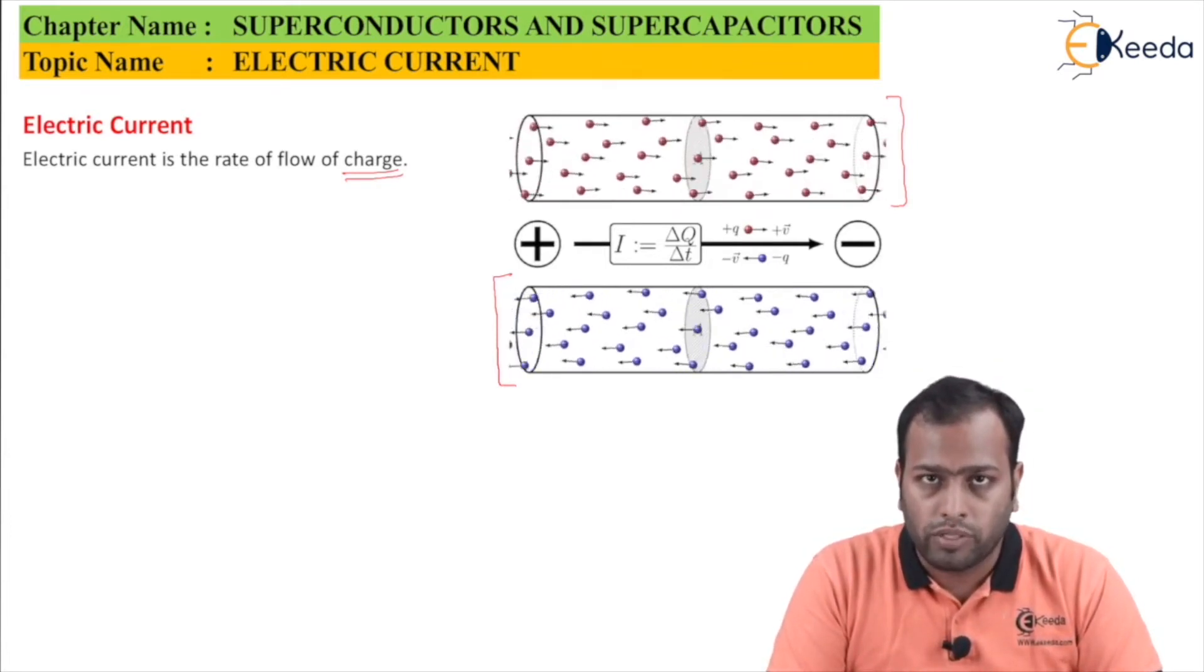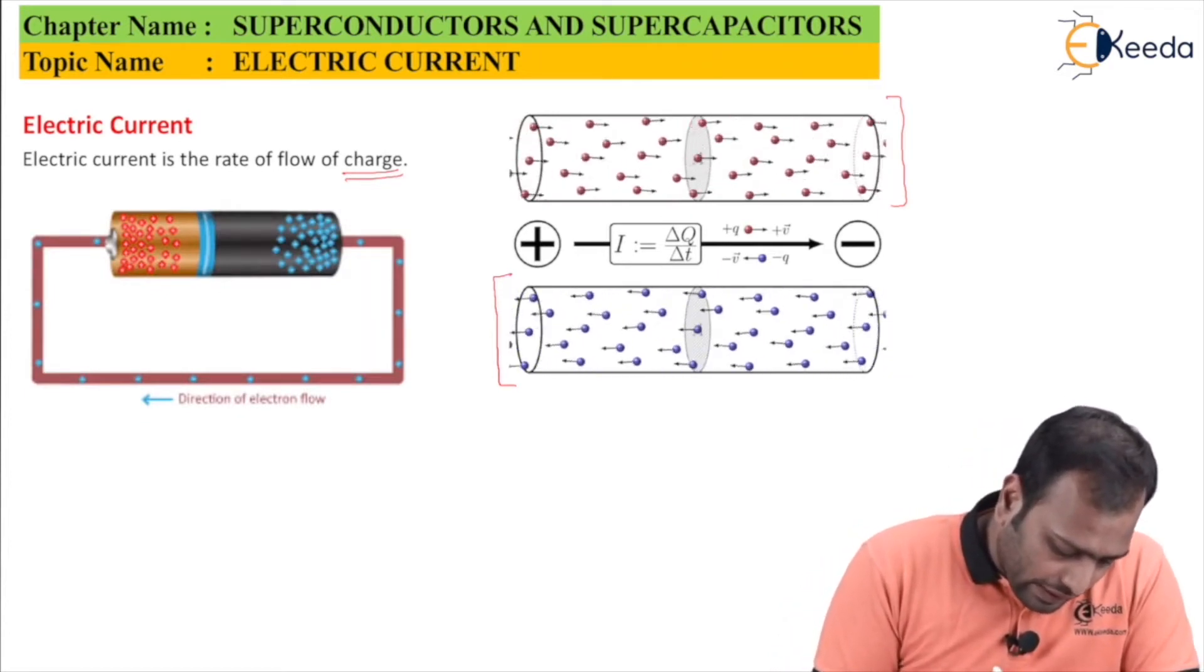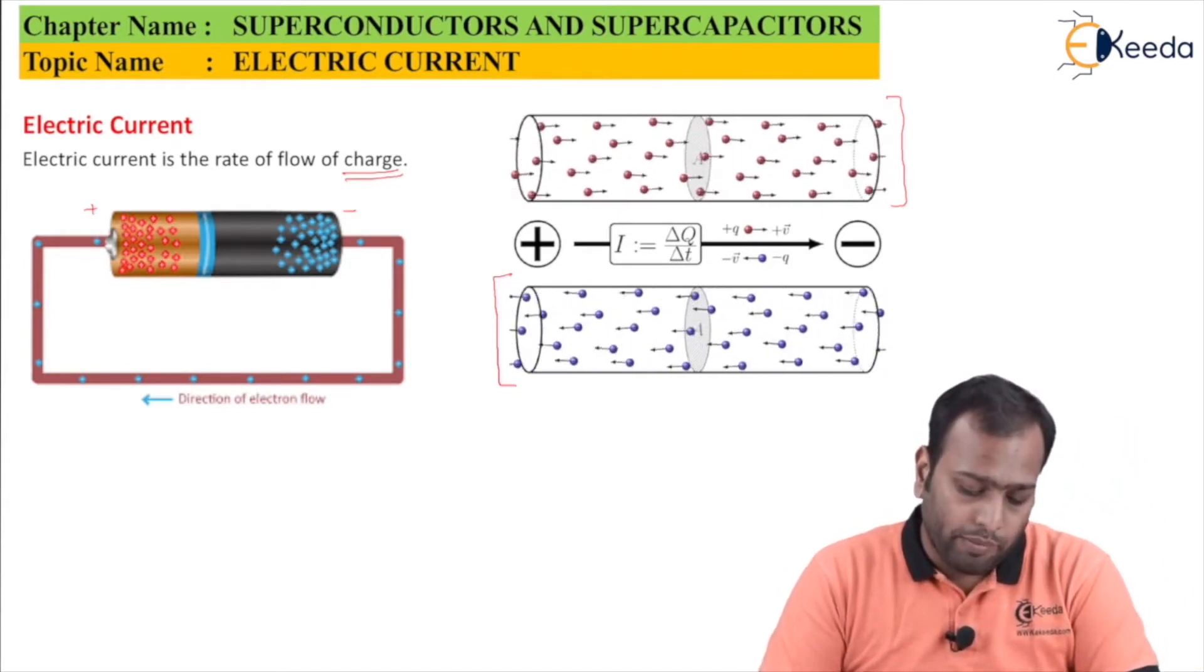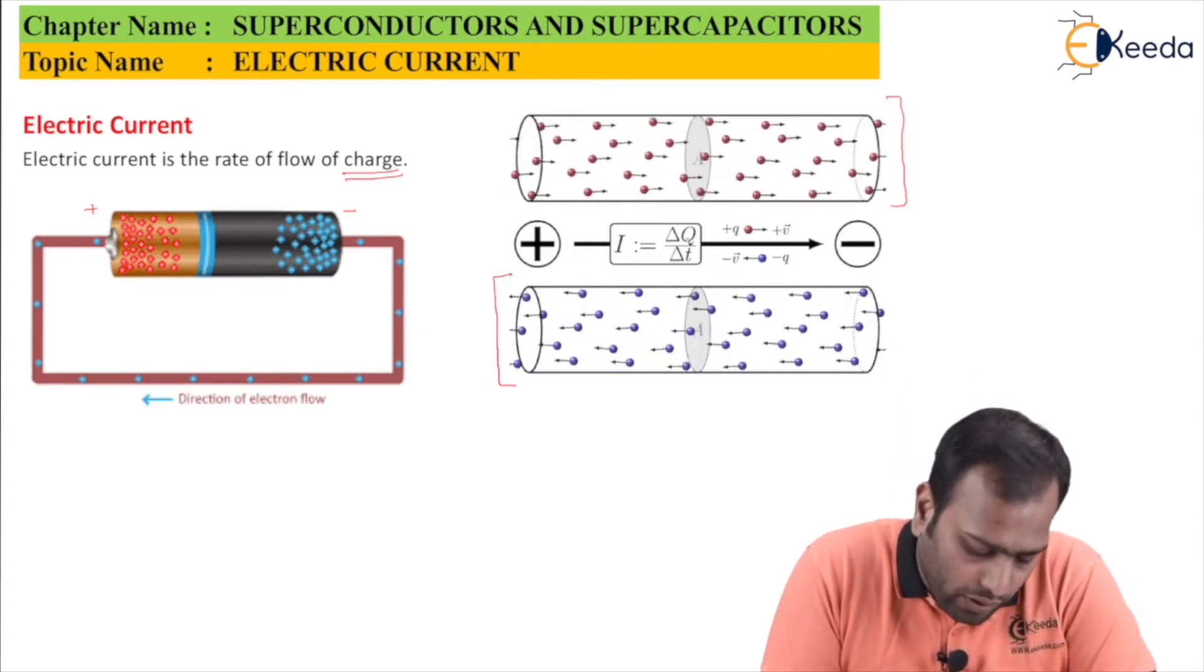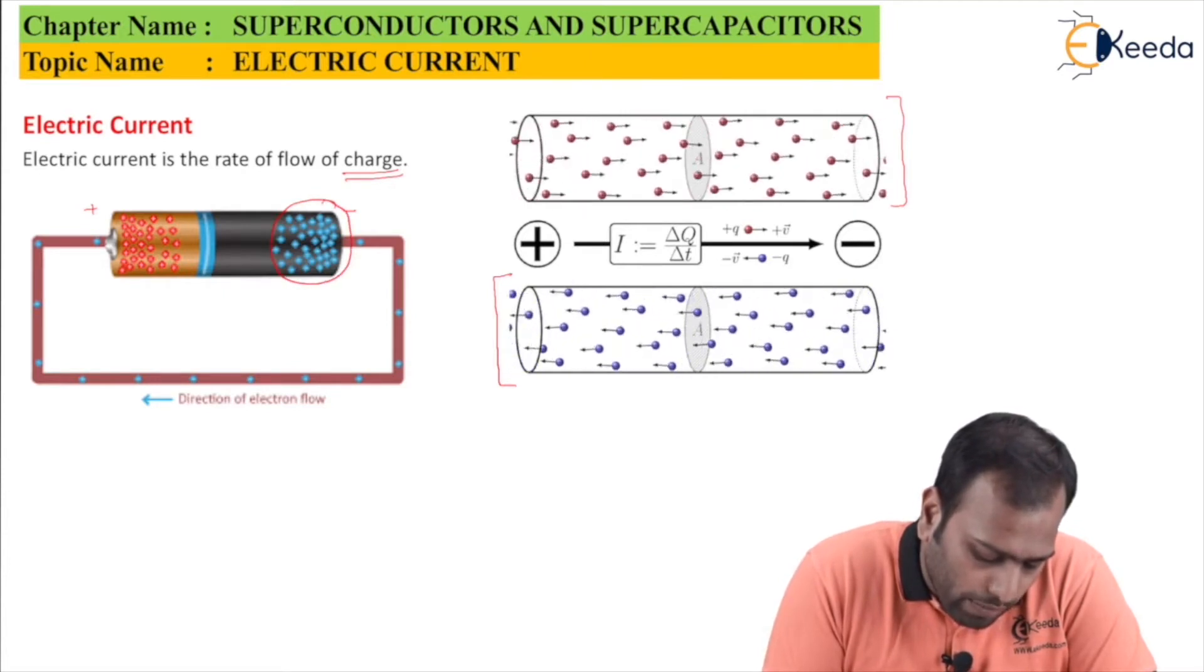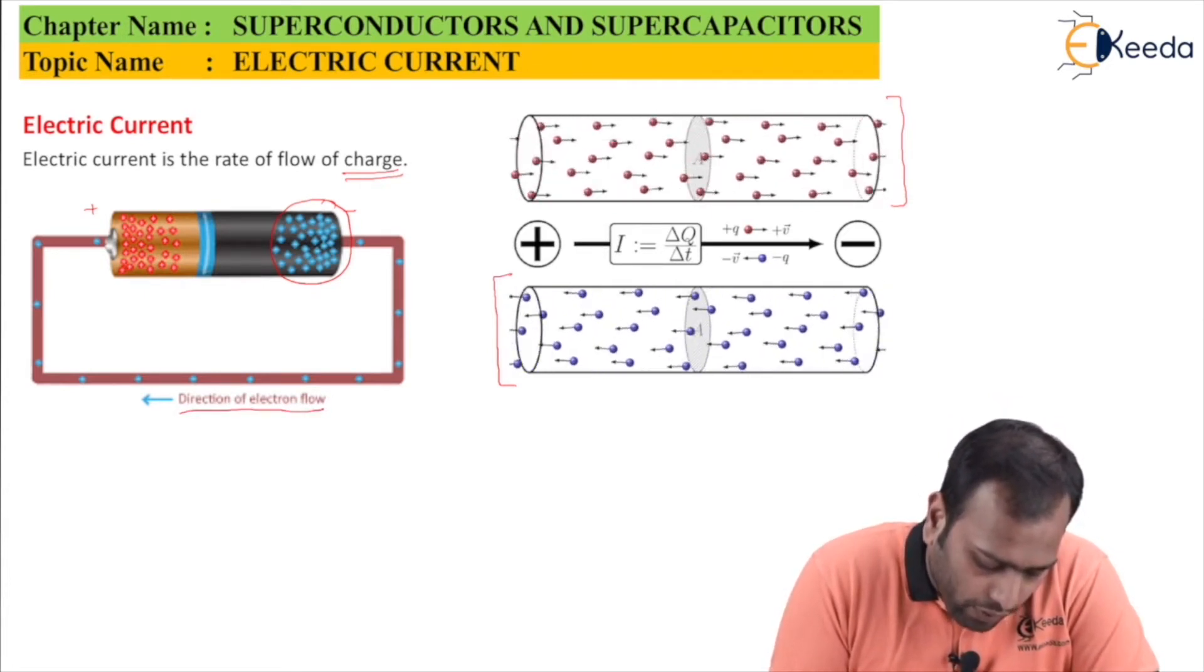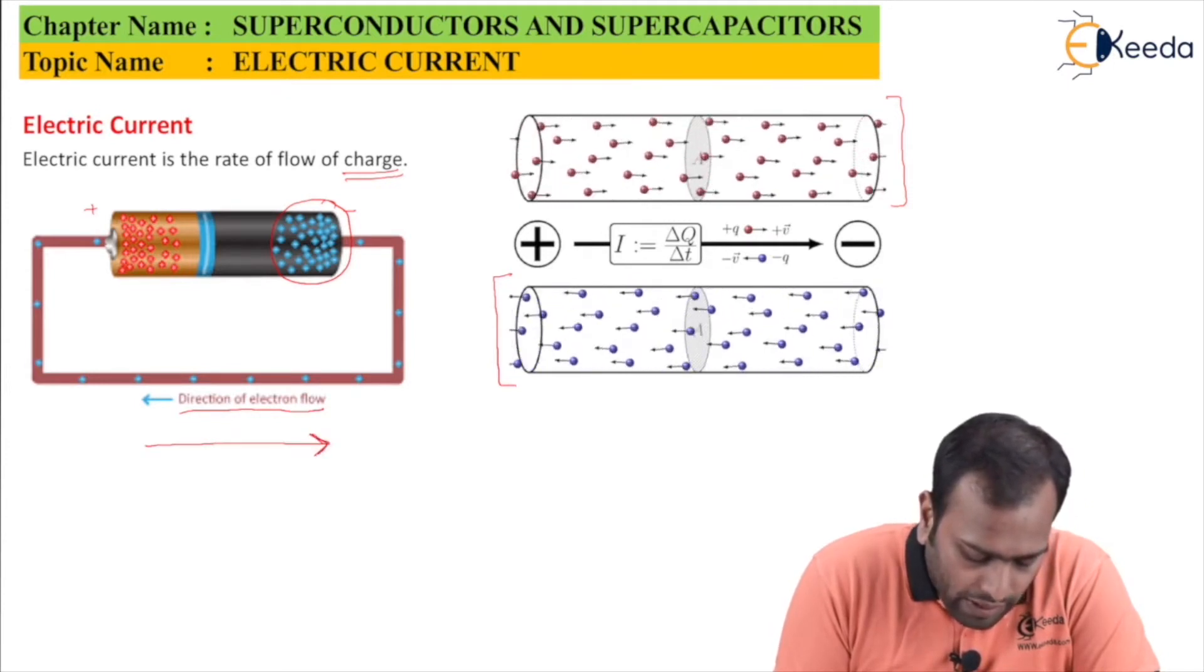As you can see, this is the positive terminal of the battery and this is the negative terminal of the battery. The negative terminal of the battery acts as source of electrons. Therefore, electrons are originating from the negative side, shown in blue, and going towards the positive side. This is the direction of the flow of electrons. If you take a reverse direction, that would have been the direction of the flow of positive particles if they were present.